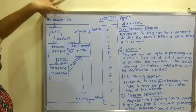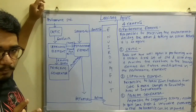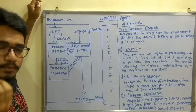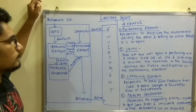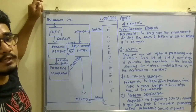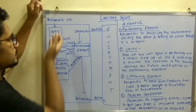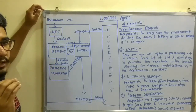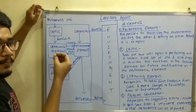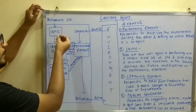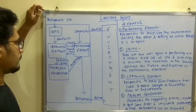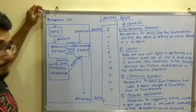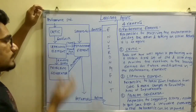The critic has a performance standard. For an agent to perform in an environment, especially when it is a learning agent, it has a performance standard that defines how the agent should work and what actions it should produce. This performance standard is loaded into the critic first. After deciding the performance evaluation of the agent in the environment, the critic produces feedback which is given to the learning element.